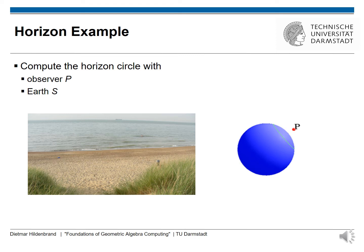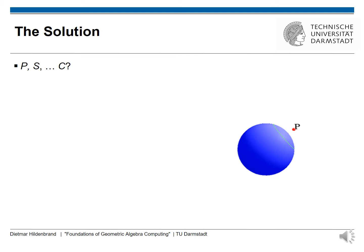Let's come to an example. Some years ago, when I was standing at the beach, I was wondering what the mathematical description of the horizon circle is depending on my observer point P and the Earth S. My question was: having the point P, the observer point, and the sphere S, how can I compute the horizon circle C?